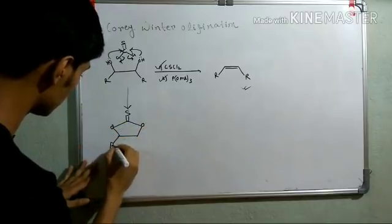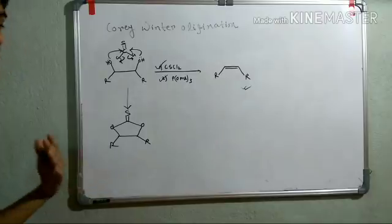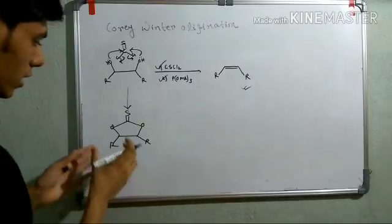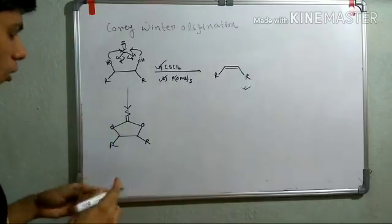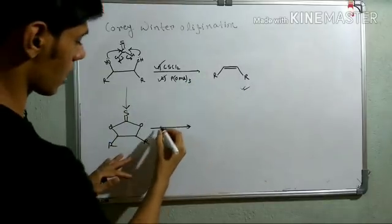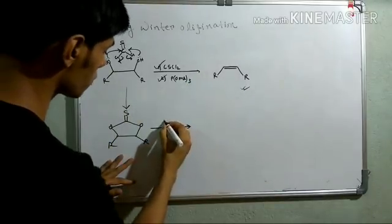Okay. So, this cyclic compound is called thionocarbonate. It is called thionocarbonate ring. Now, it is reacted with, in this case, trimethoxyphosphine.